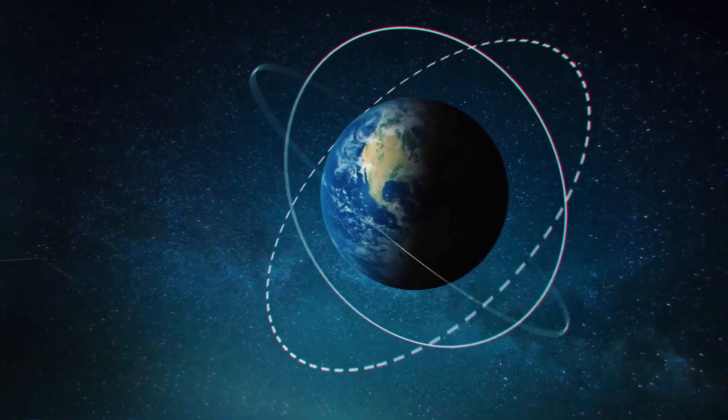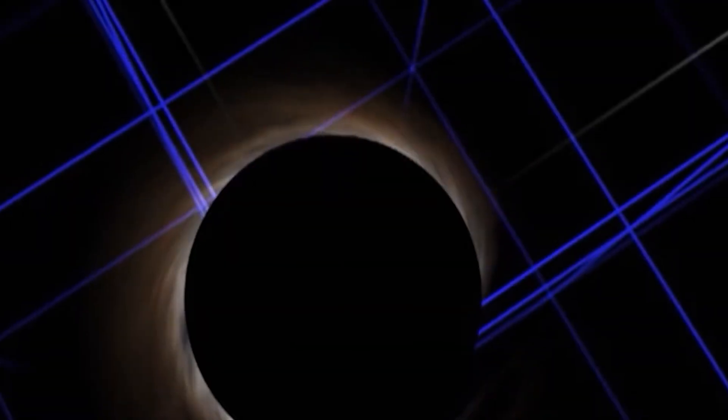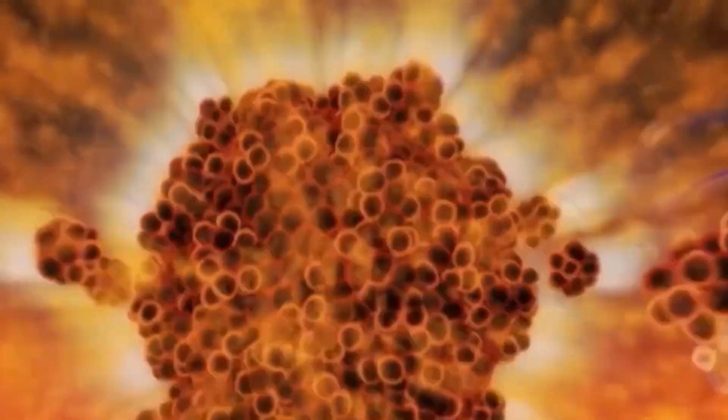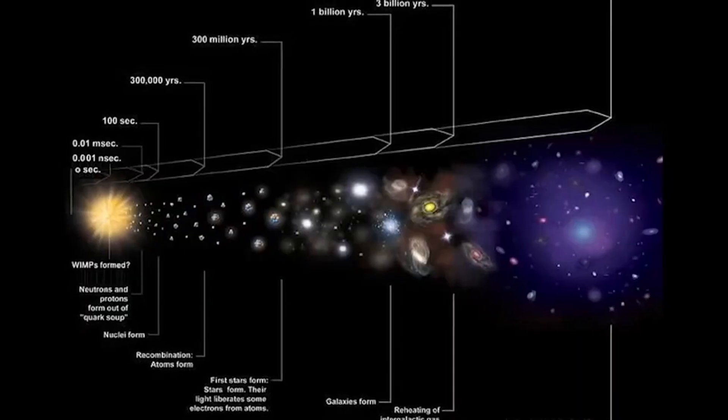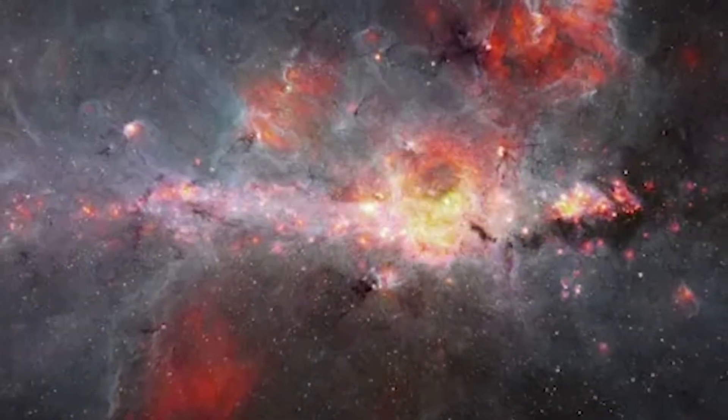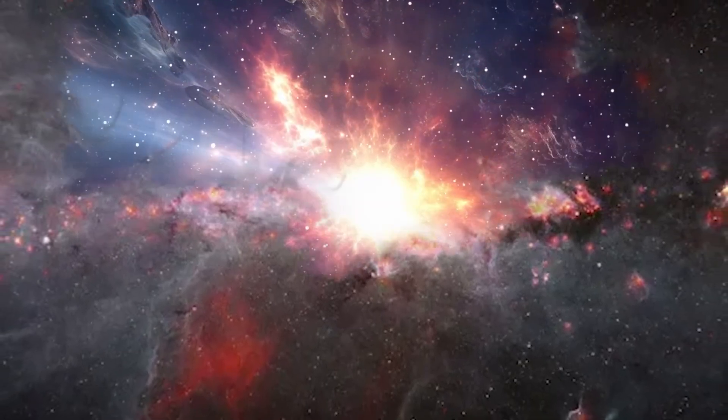The James Webb Space Telescope has not only discovered the oldest black hole but also provided new insights into these cosmic giants, revealing that black holes were more common and massive in the early universe than previously believed. The six galaxies discovered by the James Webb Space Telescope challenge our understanding of black holes and the formation of galaxies.